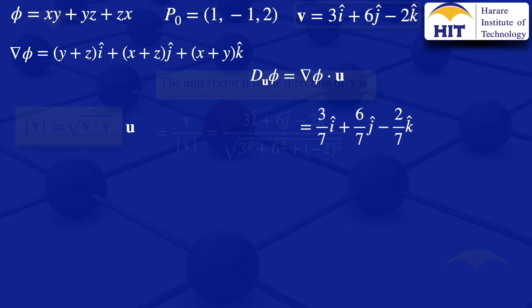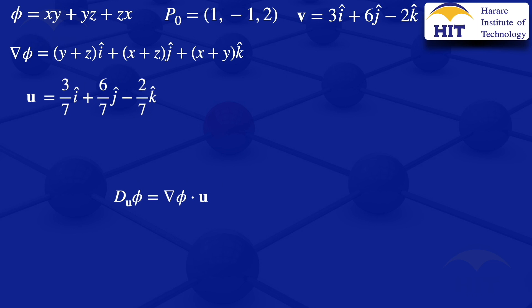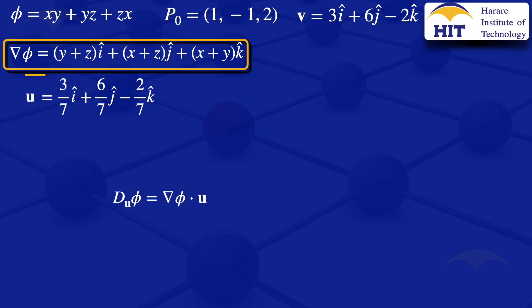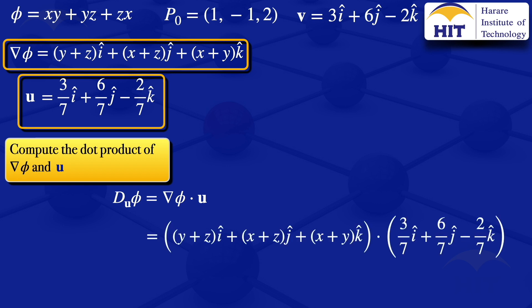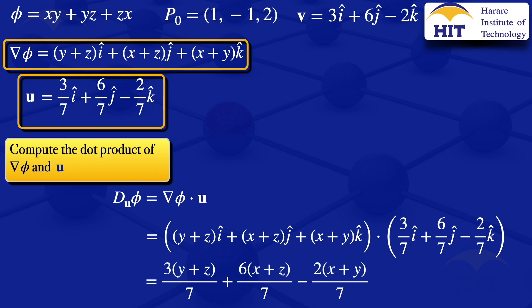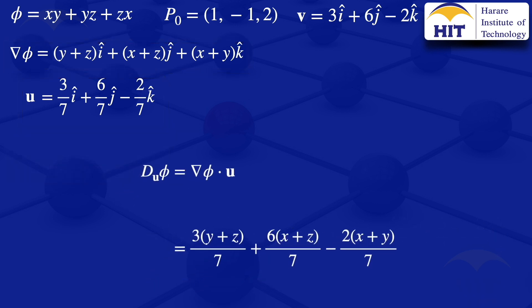We now have ∇φ and our unit vector û. We compute their dot product by multiplying corresponding i, j, and k components. The result is 3(y + z)/7 + 6(x + z)/7 - 2(x + y)/7. That is our directional derivative.